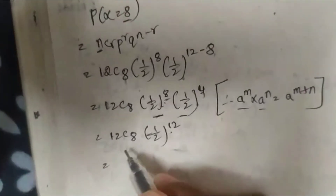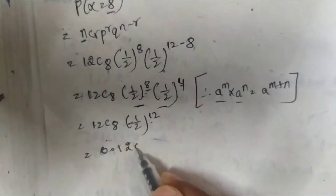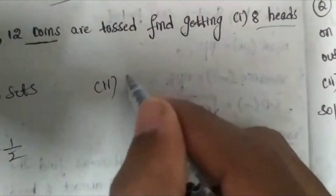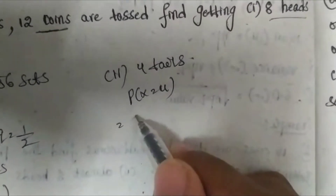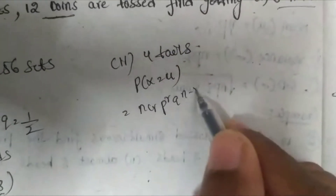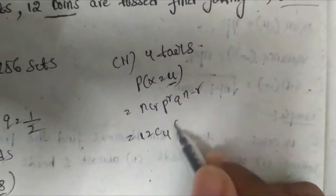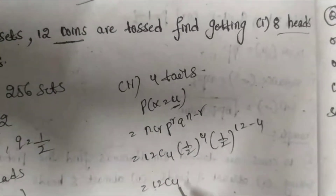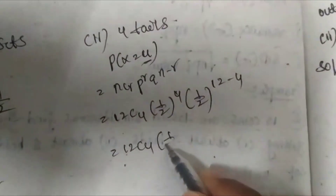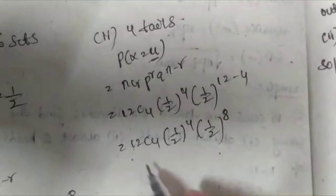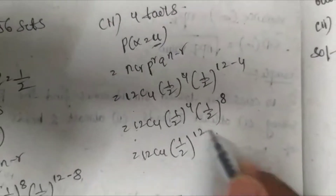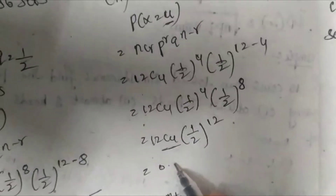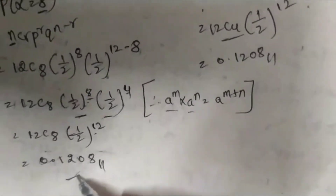Substituting this and calculating, we get the answer 0.1208. Next, for 4 tails: P(X = 4), using the formula nCr * p^r * q^(n-r), with N = 12 and R = 4: 12C4 * (1/2)^4 * (1/2)^(12-4) = 12C4 * (1/2)^4 * (1/2)^8 = 12C4 * (1/2)^12. Calculating this, the value is also 0.1208 — the same answer as for 8 heads.